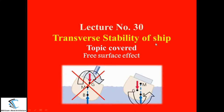Hello everyone, this is lecture number 30 of the Nodark Lecture series, made for MEO examination. In this class, we will continue with the transverse stability of the ship. Specifically, I am going to cover the free surface effect.